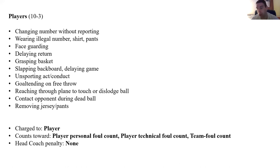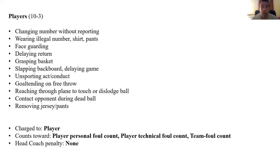Grasping the basket: you can dunk in a game, but hanging on the rim and overdoing the theatrics of a dunk is a technical foul. I had a situation a couple of years ago — boys game, 20-point game, team scores and runs back down the floor. The ball is 80 feet from the basket and this kid jumps up and grabs the rim just to show off that he could jump high enough. Ball's 80 feet behind him, no bearing on the play — that's a technical foul for grasping the basket.